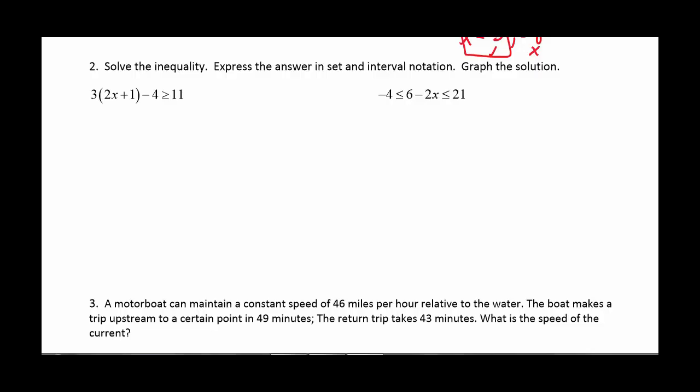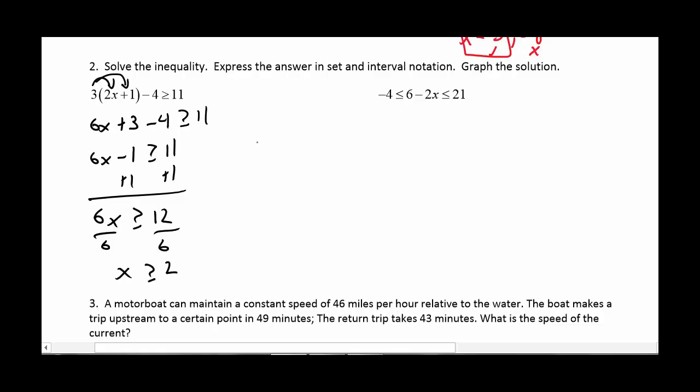We're going to solve each inequality. The trick here is to remember interval notation and then sketch a graph. So in this first one, I'm going to distribute the 3 in. So 3 times 2 is 6x plus 3 minus 4 greater than or equal to 11. So I don't distribute the 3 to the 4 because it's just where the 3 is being multiplied. I do see some like terms that I can combine. And I can add 1. So 6x greater than or equal to 12. Divide by 6. So I get x is greater than or equal to 2. So on a number line, we've got 2 that's shaded. And we're going everything to the right of it. So in interval notation, it would be 2 out to infinity.